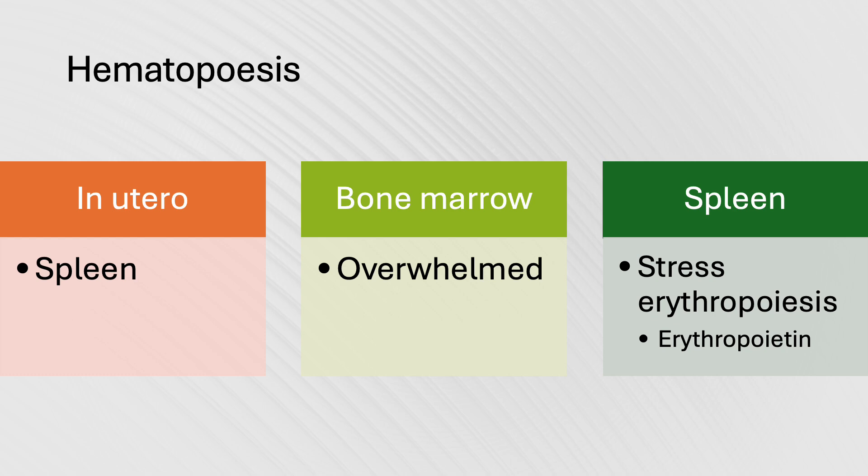Erythropoietin, or EPO, a hormone that stimulates red blood cell production, plays a crucial role in this splenic erythropoiesis. Erythropoietin is made, among other places, by the splenic macrophages.